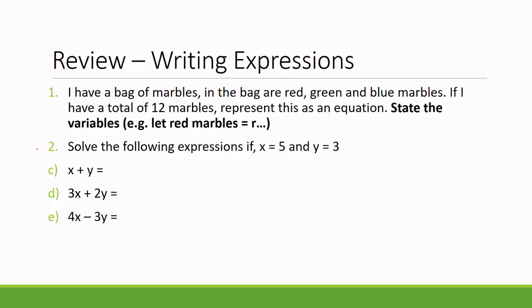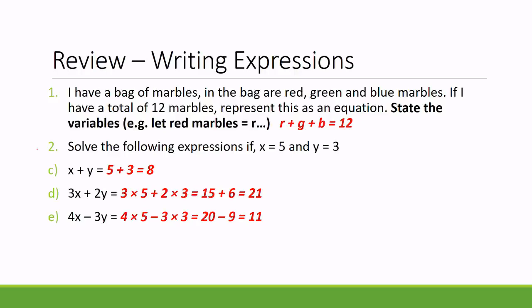Pause the video and we'll check the answers once you have done them. For question one, all I needed you to do was write down that there's some number of red plus some number of green plus some number of blue. We don't know how many, so all we can do is write the letters: R + G + B, and that total equals 12.